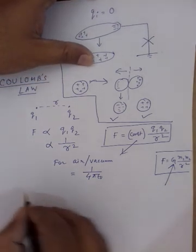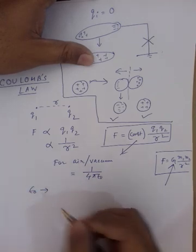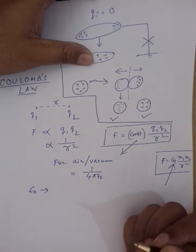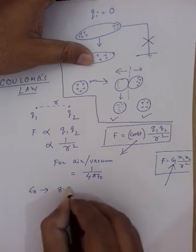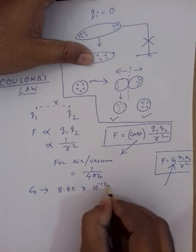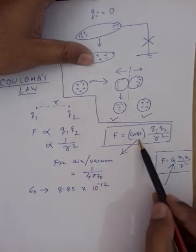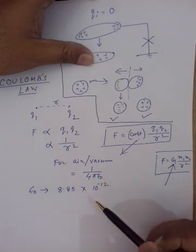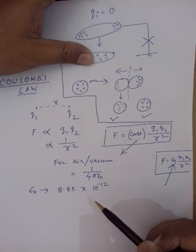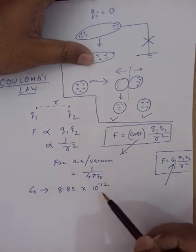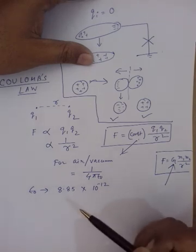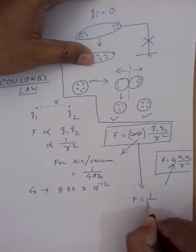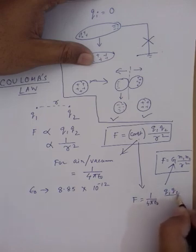The constant is 1 / (4π·ε₀). Here, ε₀ is called absolute permittivity of free space, where free space means air or vacuum. The value of ε₀ is 8.85 × 10⁻¹². To find the unit of ε₀, we use the force equation: F = (1 / 4π·ε₀) × q1·q2 / r², so ε₀ = (1 / 4π) × q1·q2 / (F·r²).